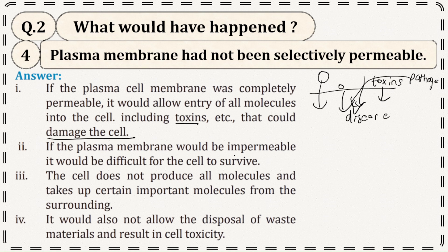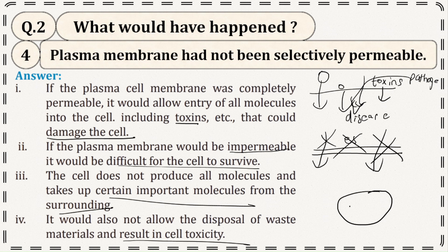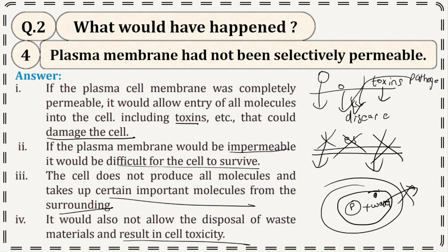If the plasma membrane were completely impermeable, it would be difficult for the survival of the cell because essential things the cell needs — water and nutrients — would not be able to enter. Also, the cell would not be able to dispose of waste material, resulting in cell toxicity. Waste products building up inside the cell would damage it.